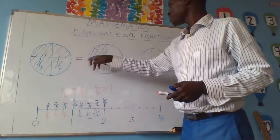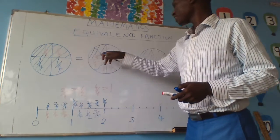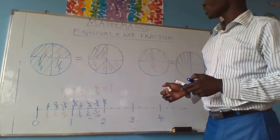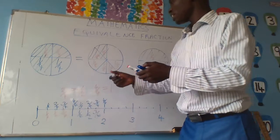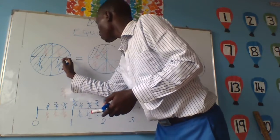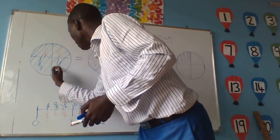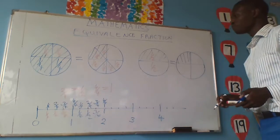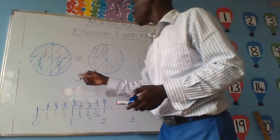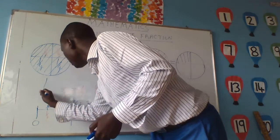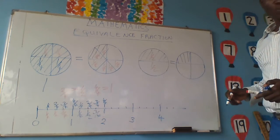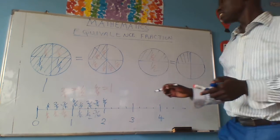We have these two circles. We are looking for the equivalents. Let us assume we have shaded the whole figure here. That means this one figure will be equivalent to how many quarters?